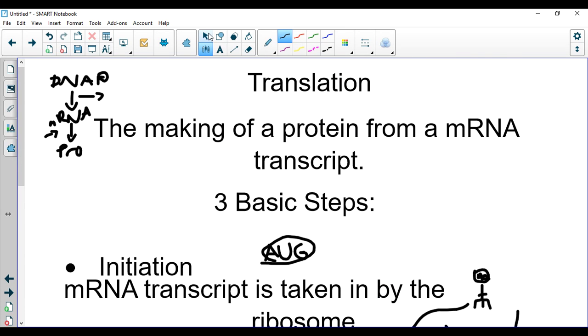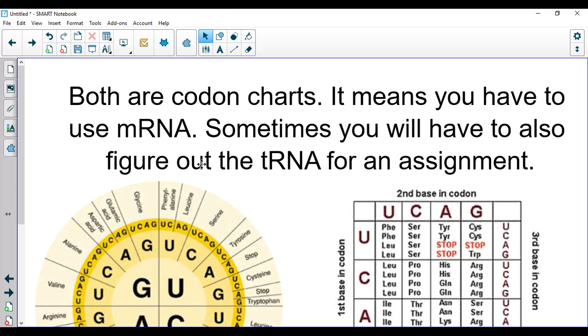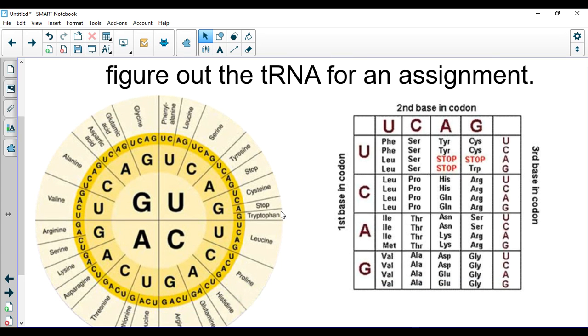Now we need to go over how to read a codon chart. You are going to practice this with little catchphrases today. But it will help you because we will do a big project where you have to do a lot of transcription and translation. So I hope you can get a grasp of this. I'm going to post another video that goes over it. The two types of codon charts that you will see: we have the circular codon chart, which is the one I personally prefer. I like being able to see the entire amino acid.